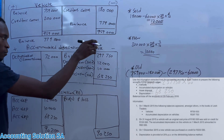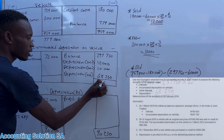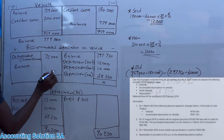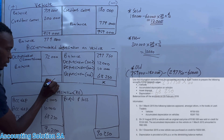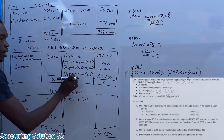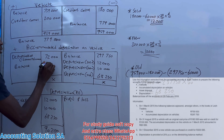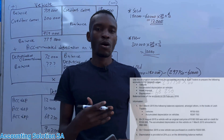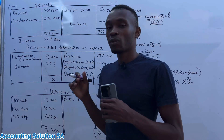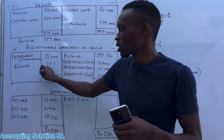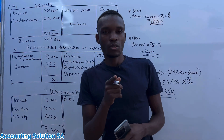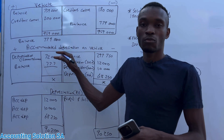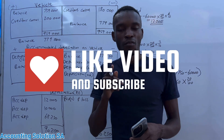After removing the 72,000, the credit side will be higher. Get the balance, write the same total on both sides, then subtract to find the closing balance. Tell me in the comment section how much you got, so I know people are watching and doing the calculations to verify we are correct. Make sure you comment the balance you got. Also check the fixed assets account video using the same question paper on the Grade 11 playlist. See you in the next one.